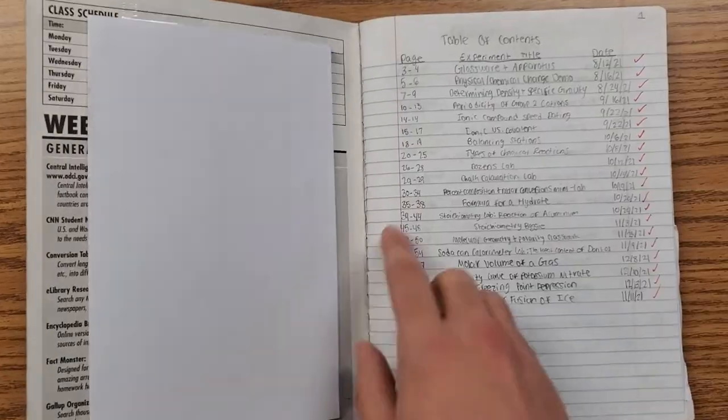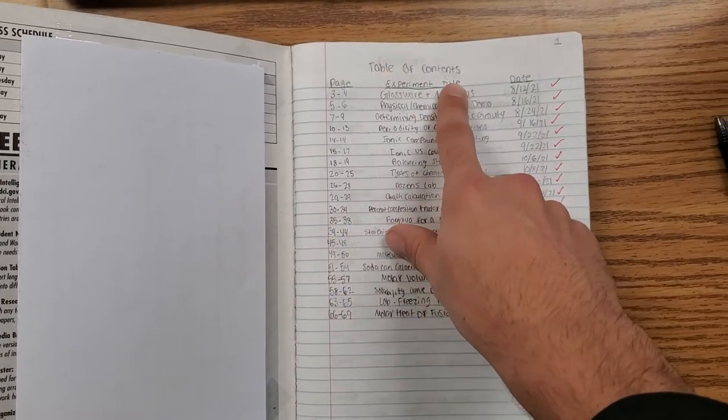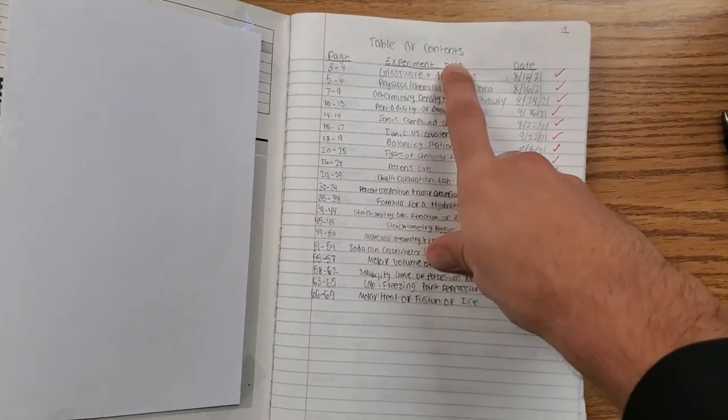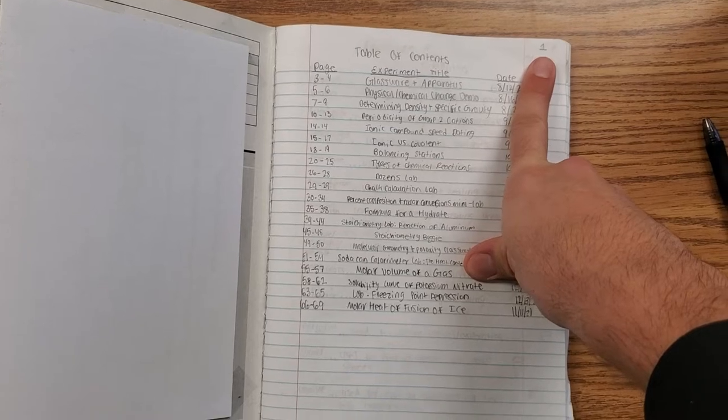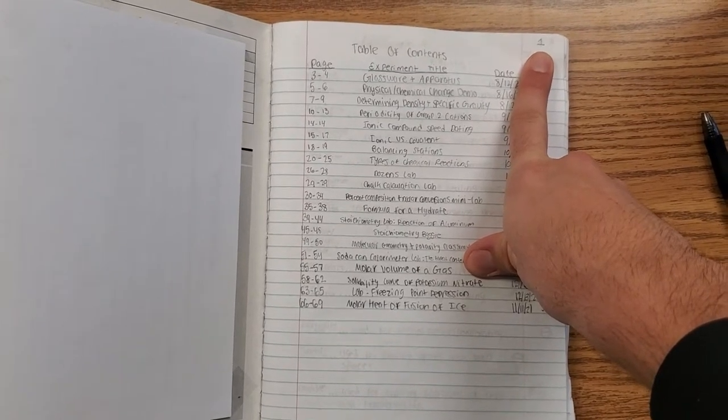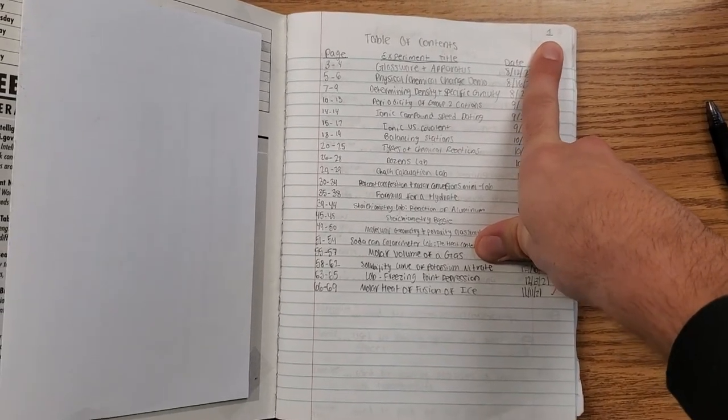Then the actual table of contents. So you should have a nice big title, 'Table of Contents,' and this is page 1. We're starting on page 1. Our page numbers need to go in the outside corners of each page. So page 1.